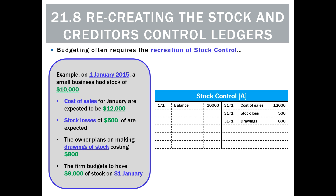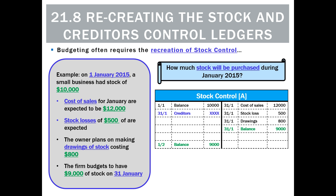We know that the firm budgets to have $9,000 of stock at the end of the period. So at some point we'll total this ledger and balance it by figuring out the difference and carrying it down. What we don't know is how much stock we'll buy — that's the unknown X here. How much stock will we buy during January 2015? To find that, we need to solve for X.